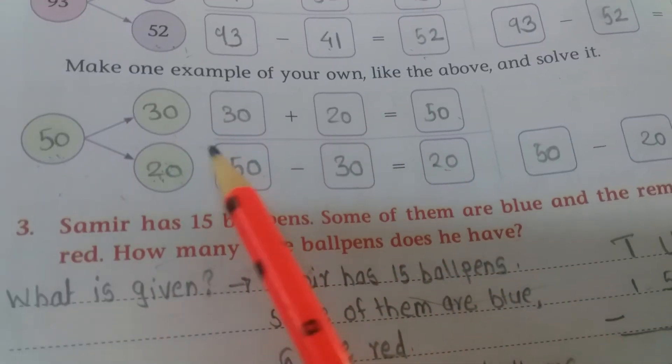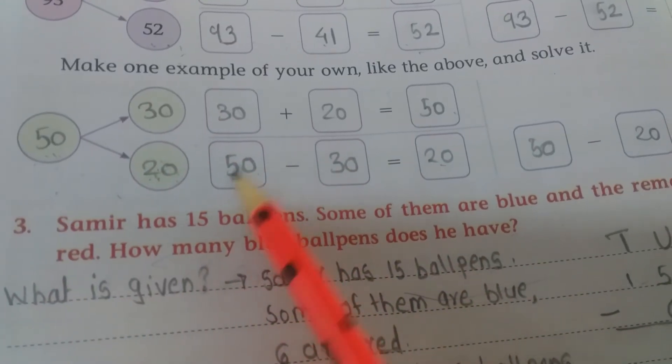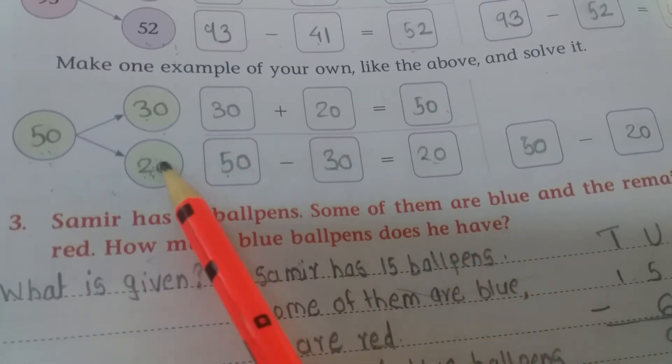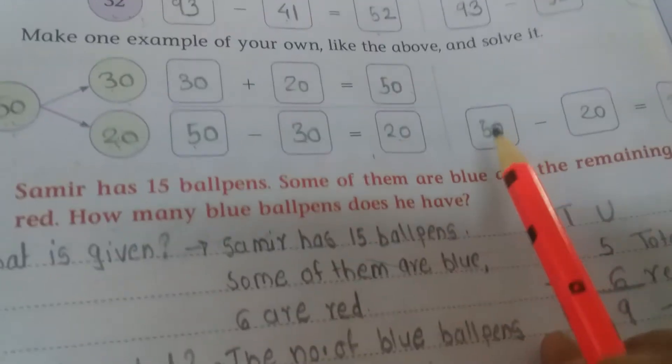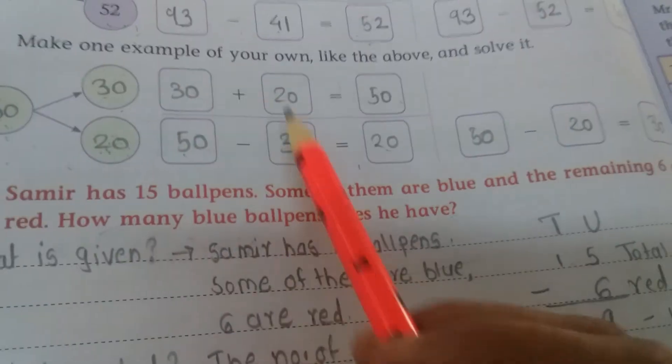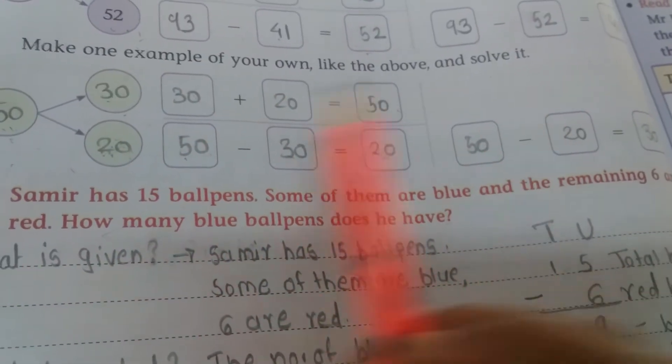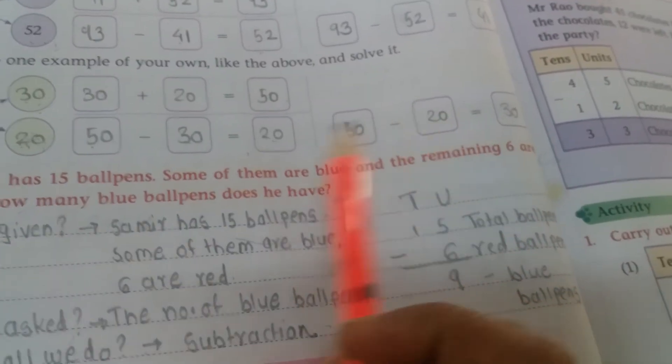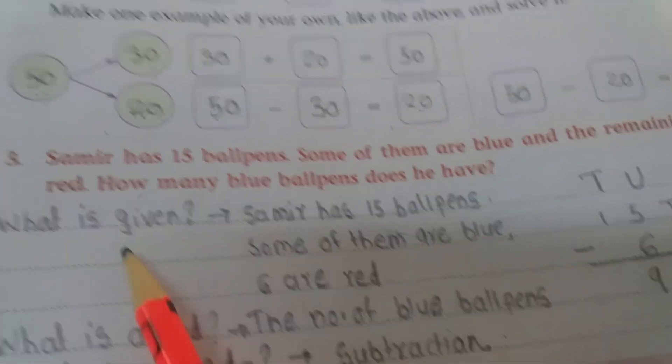Or now subtraction example, make, take the bigger number 50. 50 minus 30, 50 minus 30, then answer will come 20 here. Now 50, now 50, 50 minus 20, then answer will come here 30. 50, 50 minus 20, then answer will come here 30. Now children, see the next term.